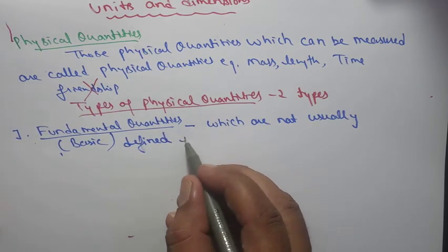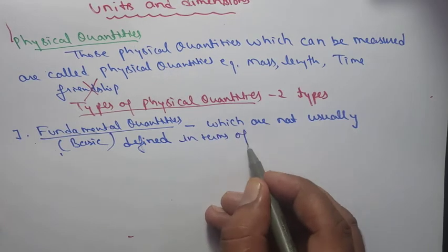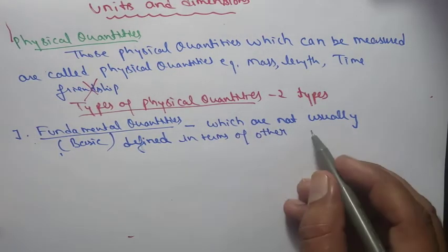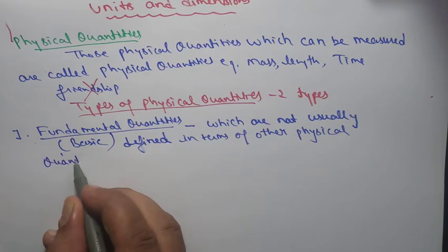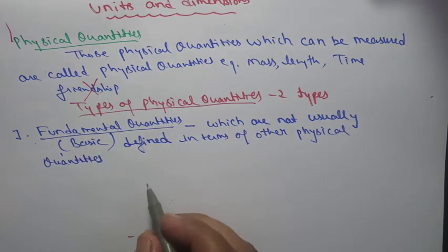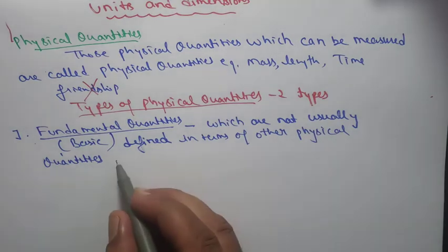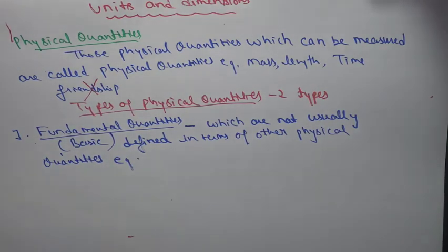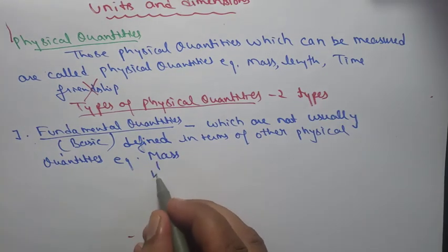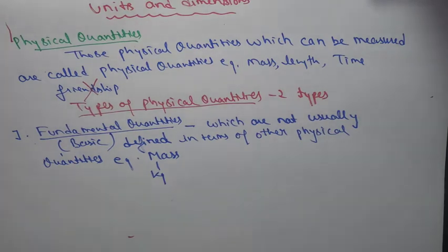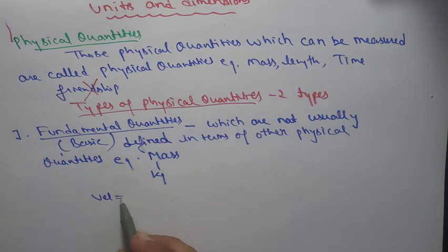For example, mass — mass is measured in kilograms, and it does not depend on any other physical quantity. Velocity, on the other hand, depends on distance and time, so it is not fundamental. Mass, time (in seconds), and length (in meters) are fundamental quantities.